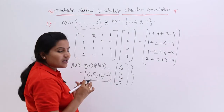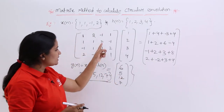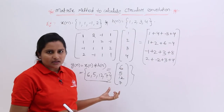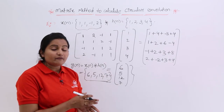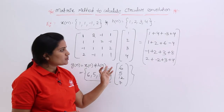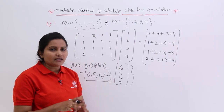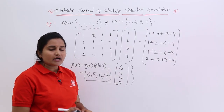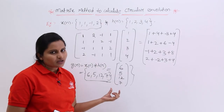So {6, 5, 12, 7} is the result of circular convolution by the matrix method. This is a simple method — you write the matrix and directly get the required number of output samples. Most people use the sum-by-column method, but in that method you first obtain linear convolution and then add samples to get the circular result. With the matrix method, you directly get the circular convolution output.